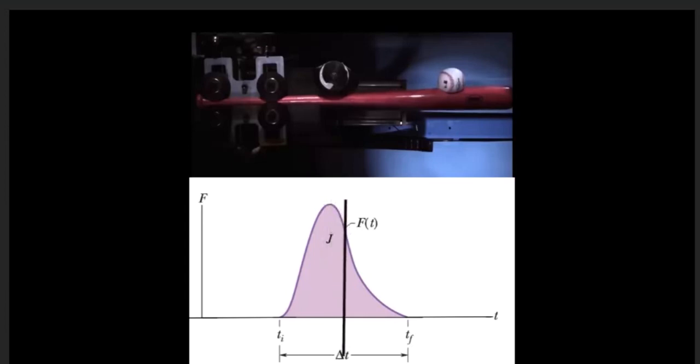And then, as the ball begins to leave the bat, and the deformity of the ball becomes less, the force acting on the ball decreases until, of course, it leaves the bat altogether, and that's when the force on the ball returns to zero.